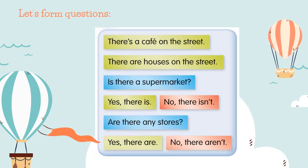Now let's form a question in the singular. What do we have to do? We have to bring the is to the beginning of the sentence. And that would make: is there a supermarket? And we can answer yes, there is, or no, there isn't. And to form the question in the plural, we also must add any, just like the sentences in the negative form. We can answer yes, there are, or no, there aren't.